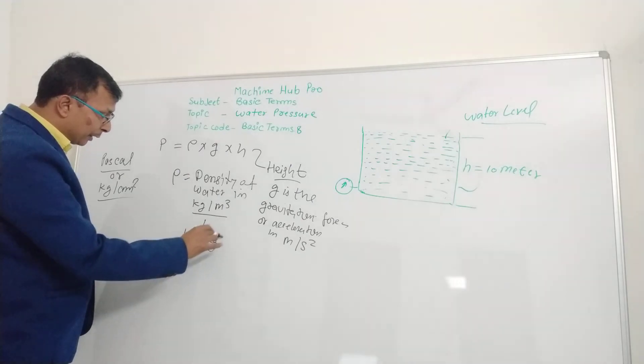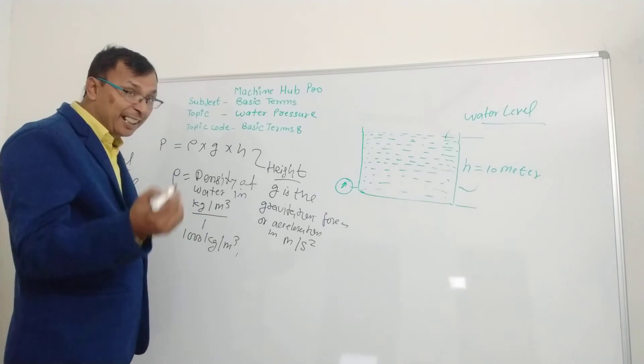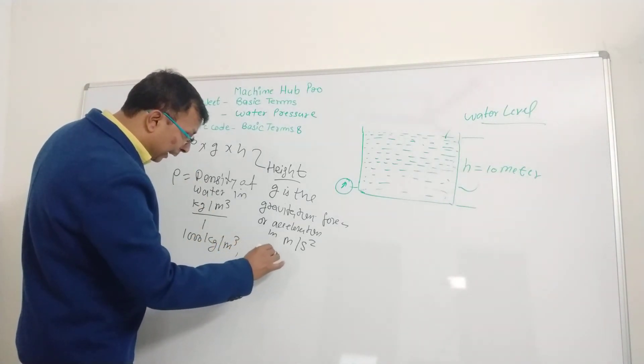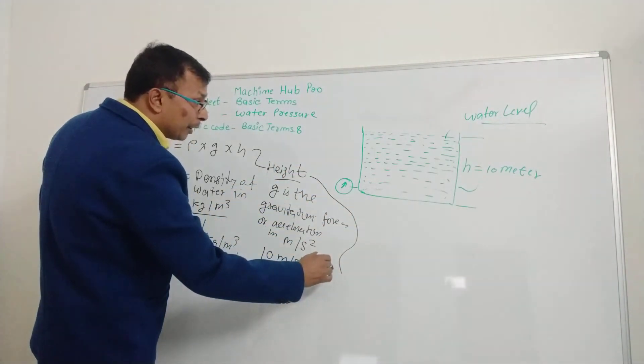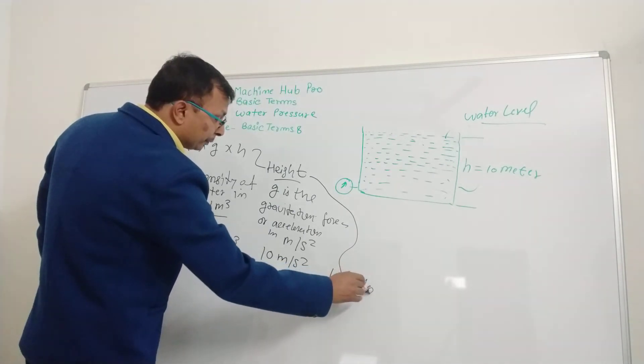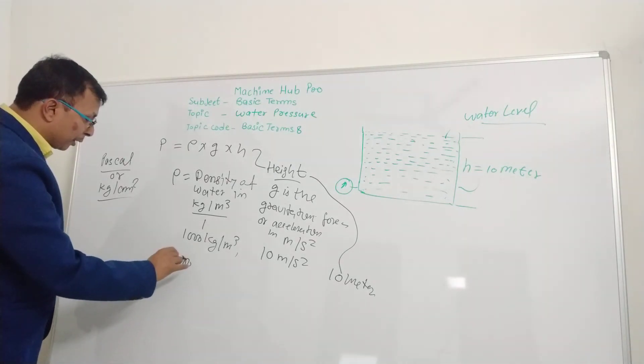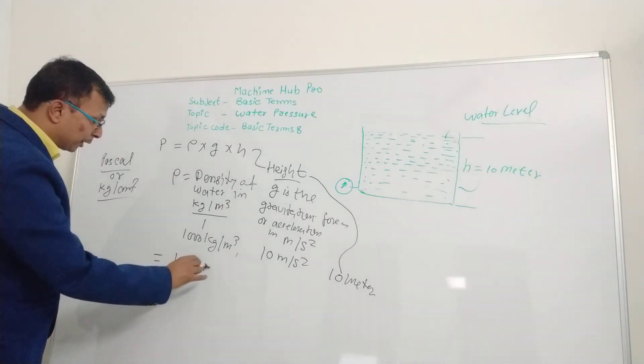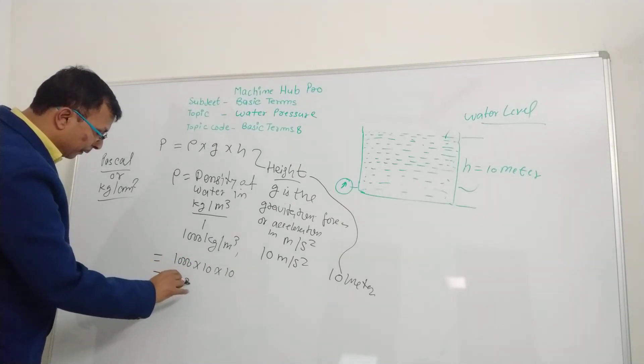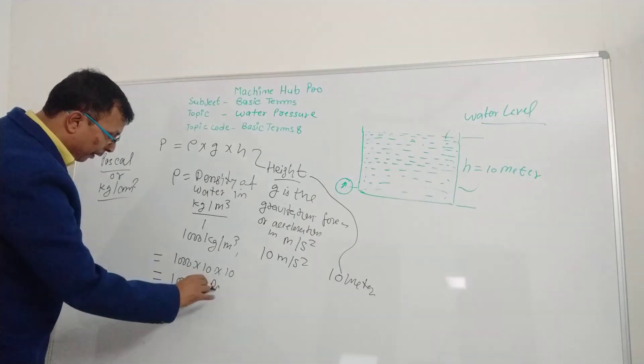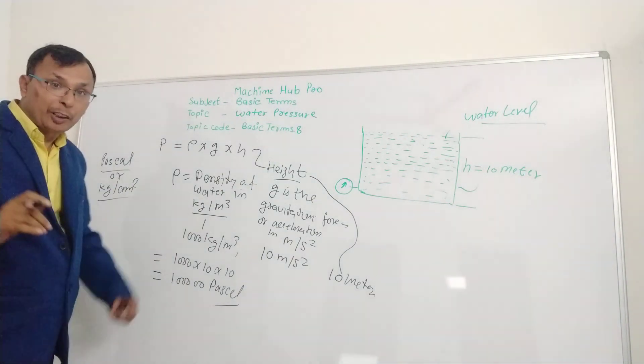1000 kg per meter cube, gravitational acceleration is 10 meter per second square, height is 10 meters. By putting these values in the formula: 1000 × 10 × 10 × 10 is equal to Pascal. Thanks!